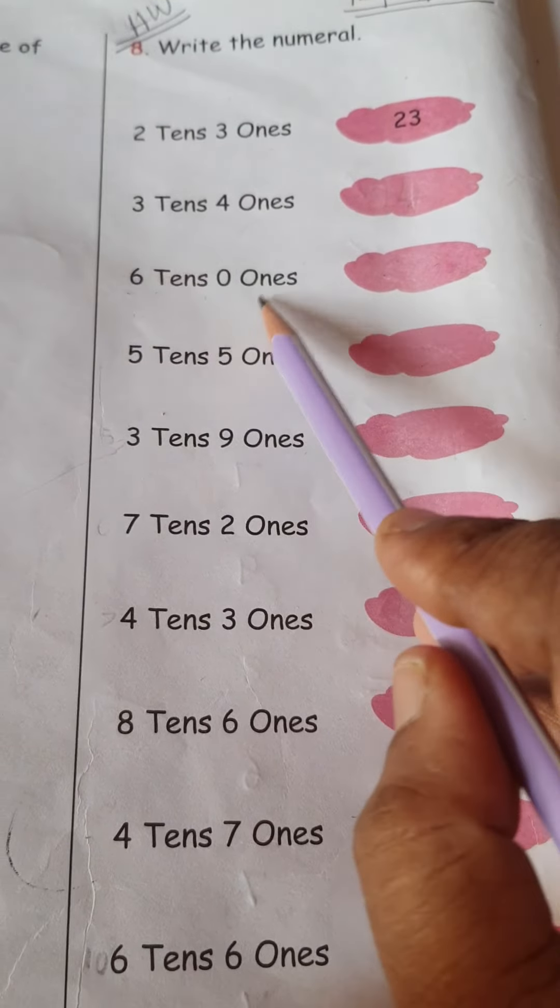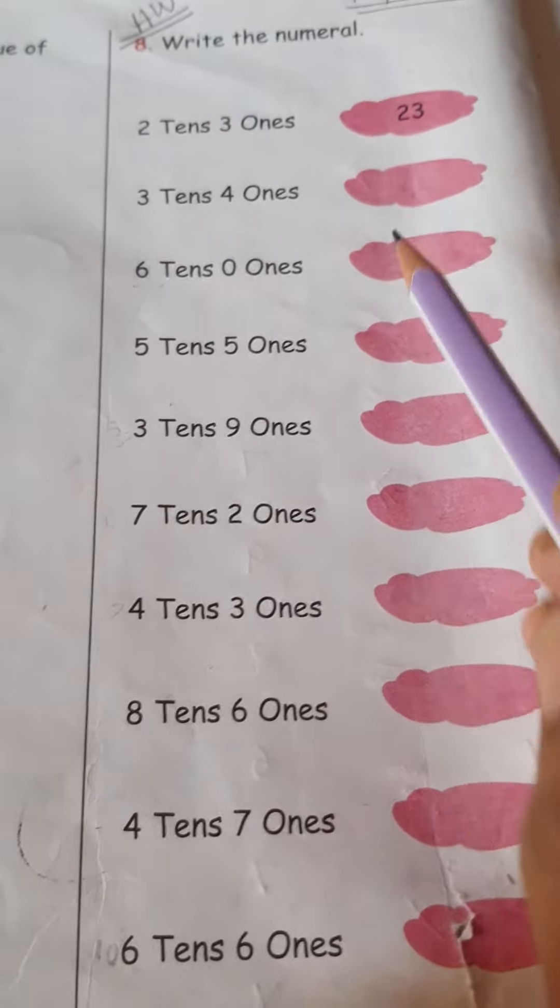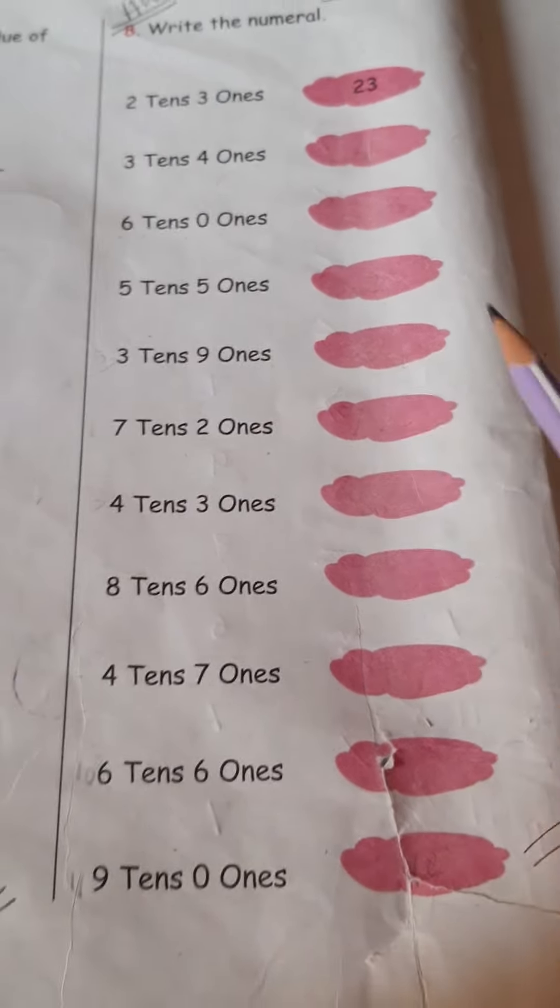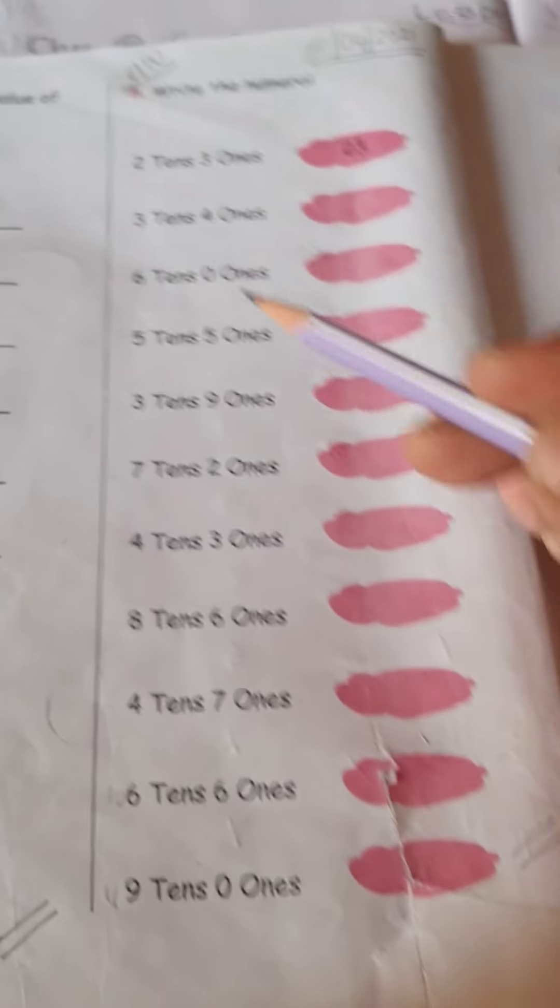6 tens, 0 ones, 60. 7 tens, 2 ones, 72. Ok? So this much for your homework.